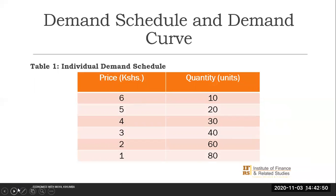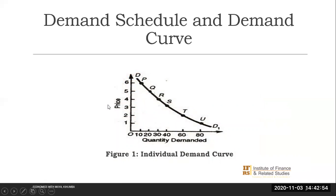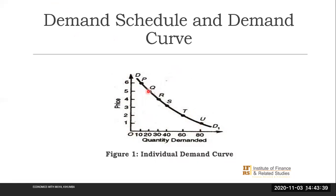We could represent this information on an individual demand curve, which is a graphical representation of the various quantities that a consumer demands. Price is indicated on the Y-axis and quantity demanded on the X-axis. You notice that when price is six, the consumer demands 10 units of the commodity at point B. And when price goes down to one, corresponding to point U on the demand curve, the consumer demands 80 units of the commodity. You'll notice that the demand curve is drawn sloping downward from left to right, and it has a negative slope.